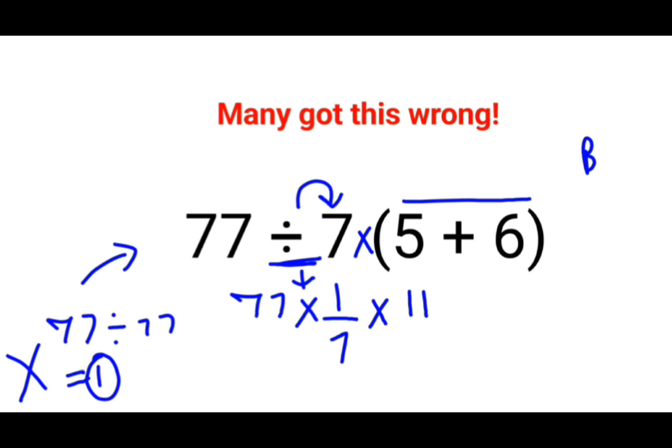So now here what happens is things are cancelling. 7 ones and this is 11s. So finally what you are getting is 11 into 11. Therefore, the answer for this one should be 121. I hope this is very clear to everyone. That's it for today. I will see you in the next video.